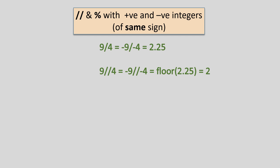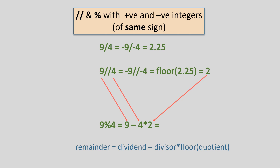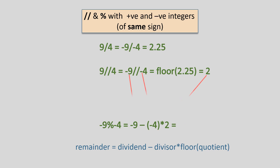Now, to calculate the remainder, we apply the formula: remainder = dividend minus divisor multiplied by floor of quotient. So, 9 modulo 4 returns 9 minus 4 times 2, which equals 1. This way, 9 modulo 4 is 1. In the same way, minus 9 modulo minus 4 returns minus 9 minus minus 4 times 2, which equals minus 1. So, minus 9 modulo minus 4 is minus 1.